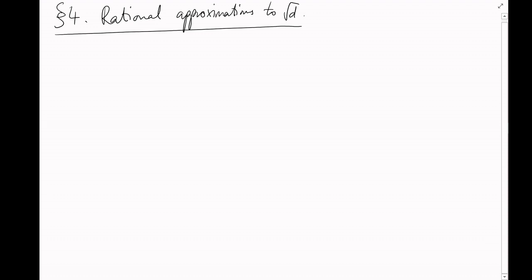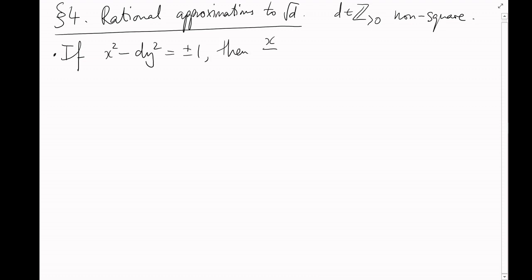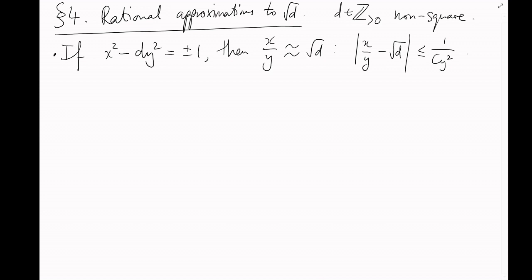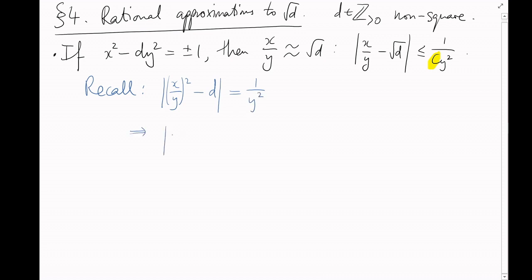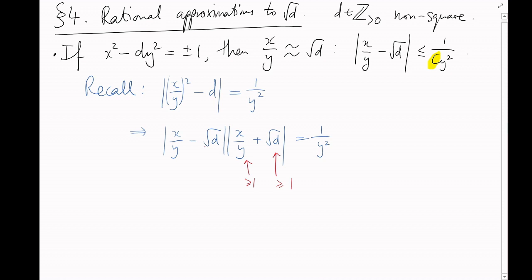Section 4: Rational approximations to √d. Here d is a positive integer that is not a perfect square. We've already seen that if x² − dy² = ±1, then x/y is a good approximation to √d in the sense that |x/y − √d| ≤ 1/(cy²) for some constant c. To link this to continued fractions, we need to take a closer look at that constant c. Excluding the trivial case d = 1, since √d > 1 any decent approximation x/y will also be at least 1, so we can bound the second factor below by 2, giving c = 2: |x/y − √d| ≤ 1/(2y²).